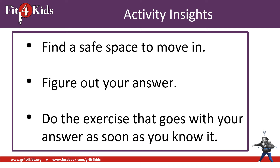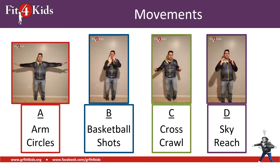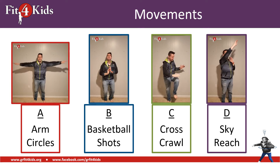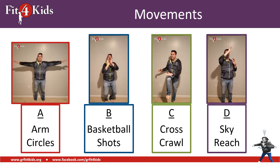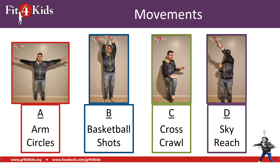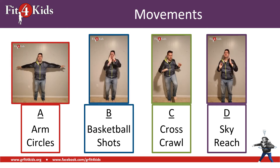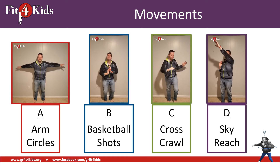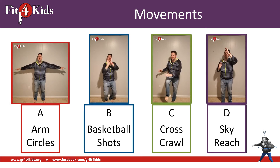It's important that you have a safe space for the activity. A question is going to come up on the screen, which I'll read through, as well as the answer choices. You need to figure out your answer, then do the exercise that matches that answer. These are the four movements: A will be arm circles, B are basketball shots, C are cross crawls, and D are sky reaches. Each one will be demonstrated by an animated picture of Coach Suho, so if you forget which is which, don't worry — it'll show up next to the question.